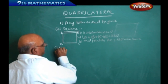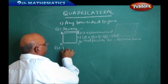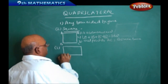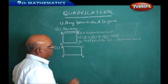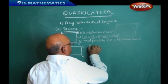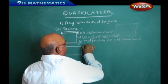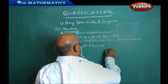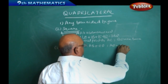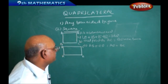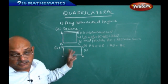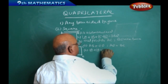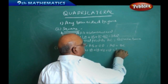The next shape is a rectangle. Let us call it ABCD. In a rectangle, AB is equal to CD, meaning opposite sides are equal. Similarly, AD is equal to BC. The angle between adjacent sides is 90 degrees, and the sum of all angles — angle A plus angle B plus angle C plus angle D — equals 360 degrees.